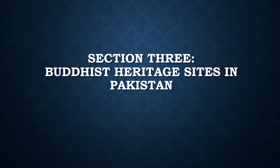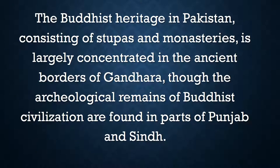This is the third section. Buddhist heritage sites in Pakistan are quite numerous. This map lists all these sites — there are like 38 sites here, and I've only listed a few. They are largely comprising stupas and monasteries within the ancient borders of Gandhara, though archaeological remains of Buddhism are also found in Punjab, Sindh, and Gilgit-Baltistan. This is just a very quick overview of what we have.